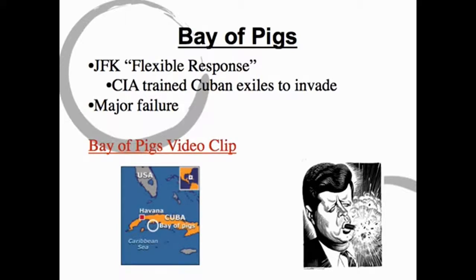So there was a response by the United States government. President Eisenhower, who had taken over for Truman and was president in the late 1950s, authorized a secret plan to deal with the threat of communism in Cuba. He authorized the Central Intelligence Agency — the CIA — to train Cuban exiles.